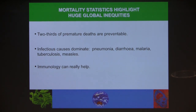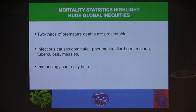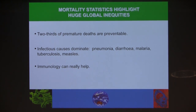As we go through these next five or six slides, I'd like you to remember that two-thirds of the premature deaths are preventable, and that infectious causes still dominate in the developing countries — with pneumonia, diarrhea, malaria, tuberculosis, and measles exercising the worst toll. Immunology, particularly vaccines, and also monoclonal antibodies, can really help.